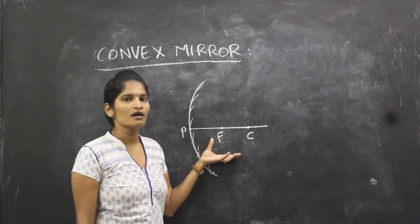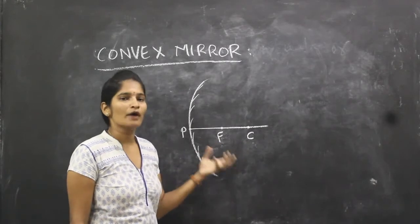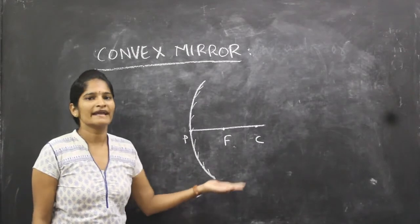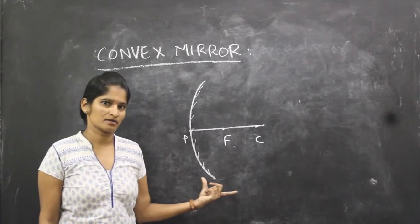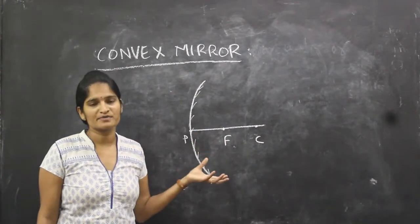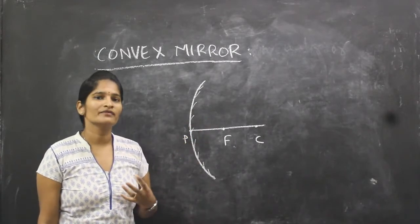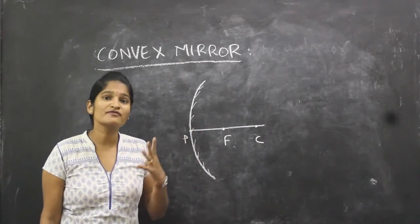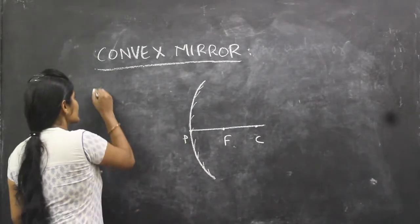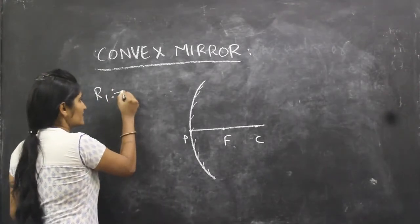These are the key terms related to the convex mirror. Always, a convex mirror forms a virtual and erect image. Now we will see how to draw ray diagrams for a convex mirror. As we have seen for a concave mirror, we studied six conditions and four ray diagrams — four rules for rays to travel.